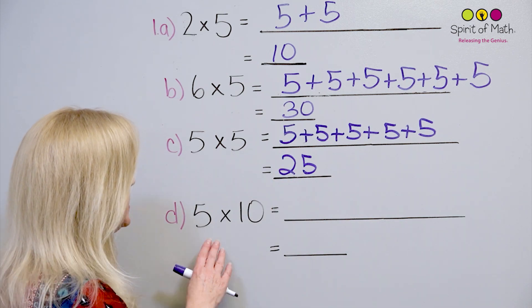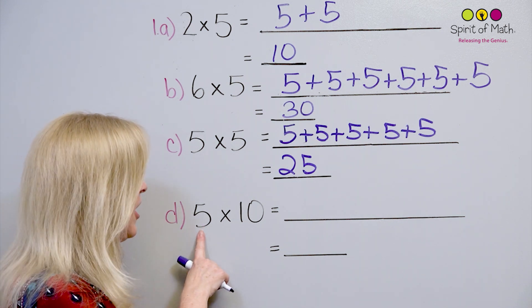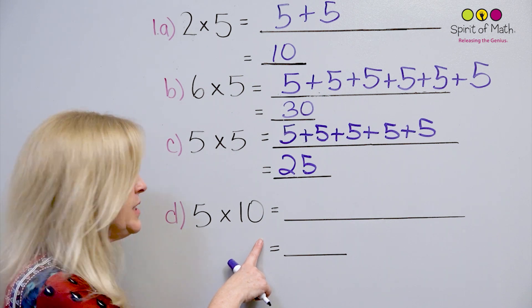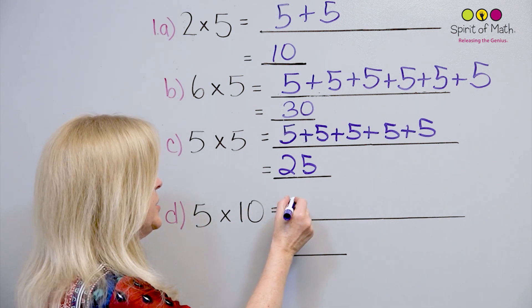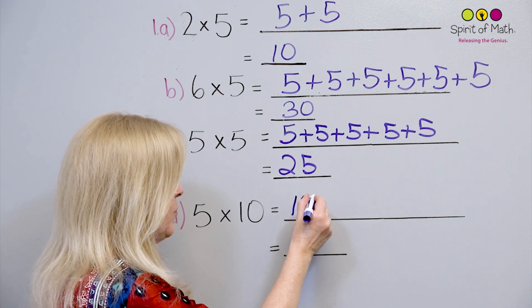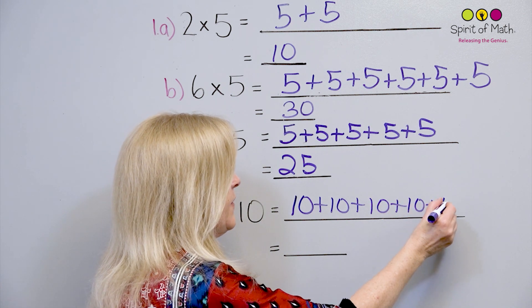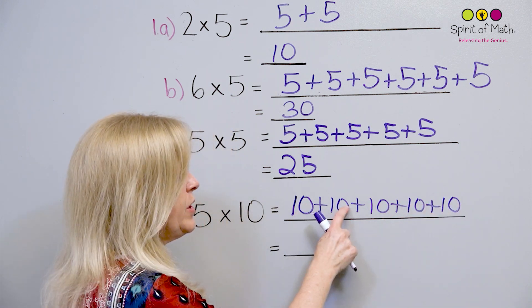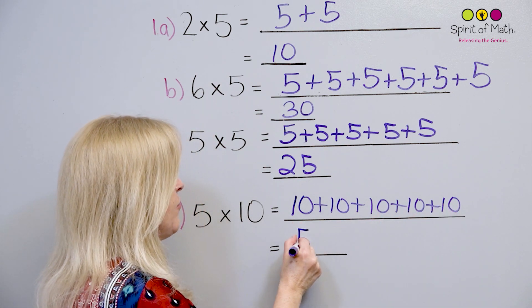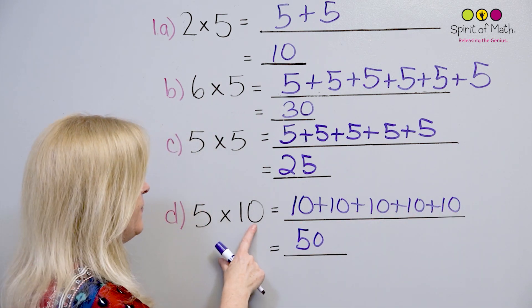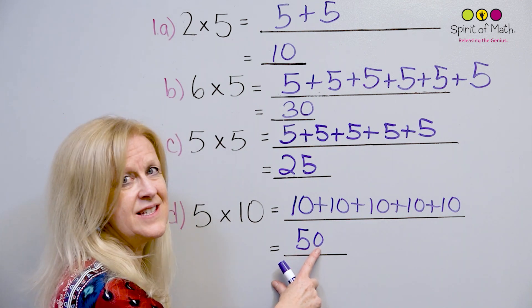Another one — look, we've got the 5 at the front here. This is 5 times 10, so this time it's 5 groups of 10. We can do 5 groups of 10: 1, 2, 3, 4, 5. And that's 10, 20, 30, 40, and 50. And remember, it's the same as saying 50, which is 5 tens.